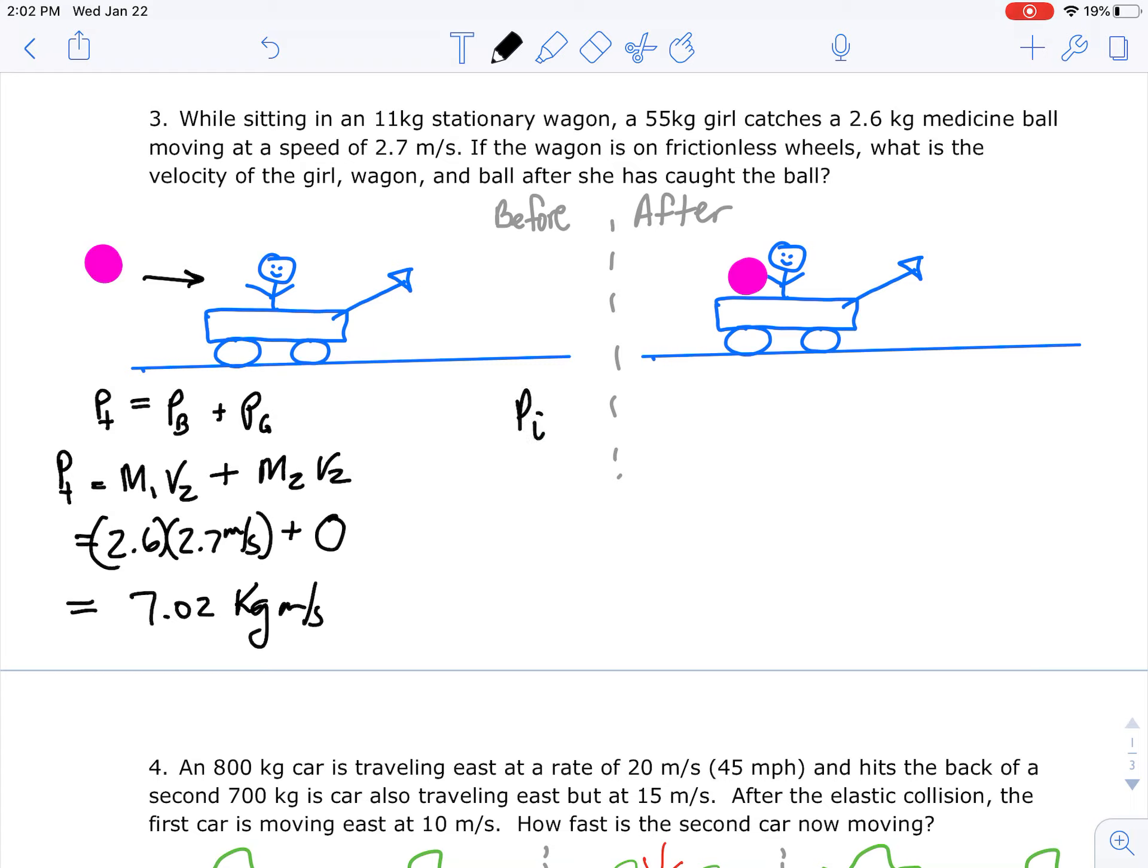We know that our momentum initial is going to equal our momentum final, law of conservation of momentum. So I'm going to have 7.02 equals the mass of the ball plus the mass of the girl plus the mass of the wagon times the velocity of that wagon. We're trying to solve for V in this case. So 2.6 plus 55 is the mass of the girl plus 11 is the mass of the wagon times V. And you can go ahead and solve for V. So 7.02 divided by that answer, we get 0.10.